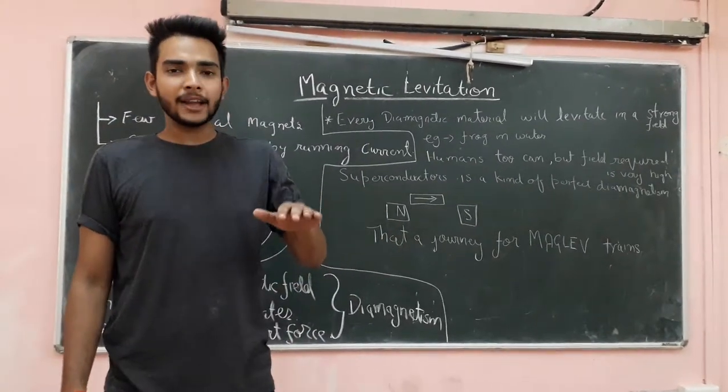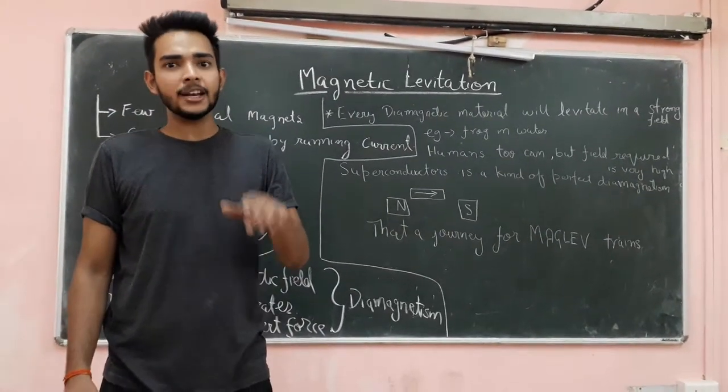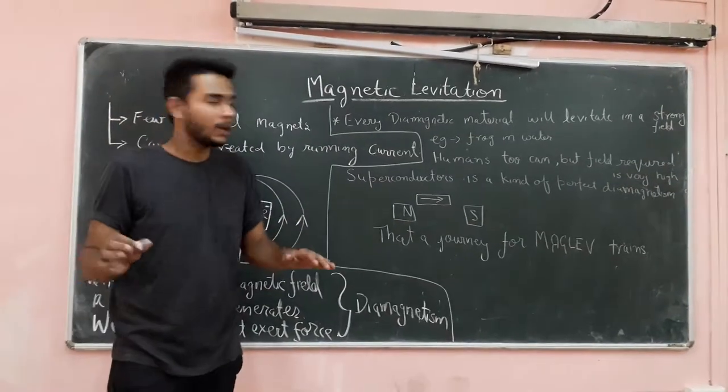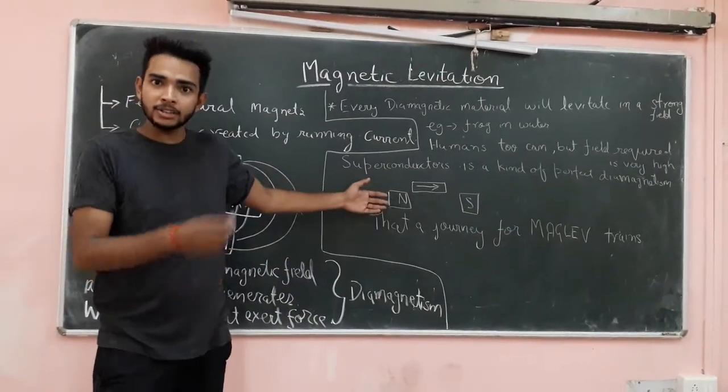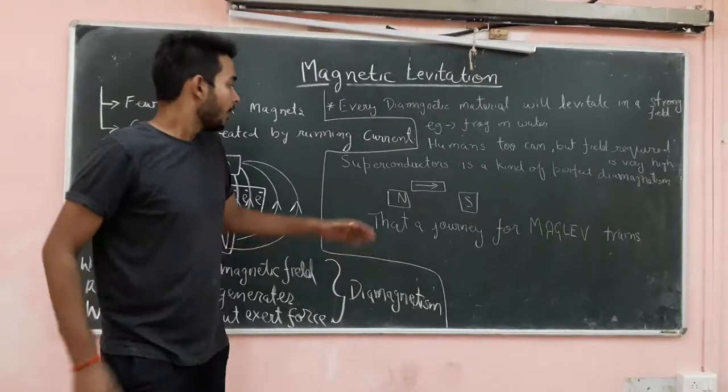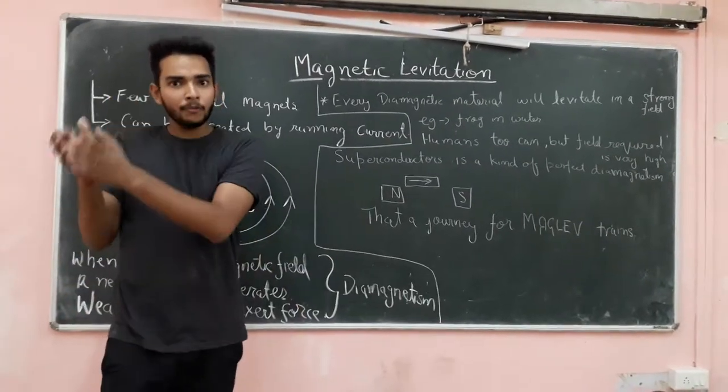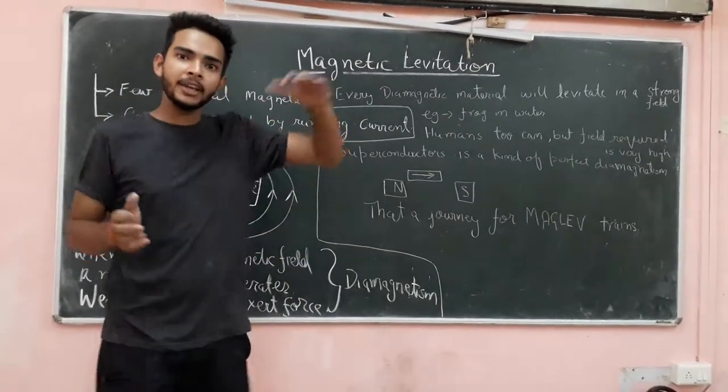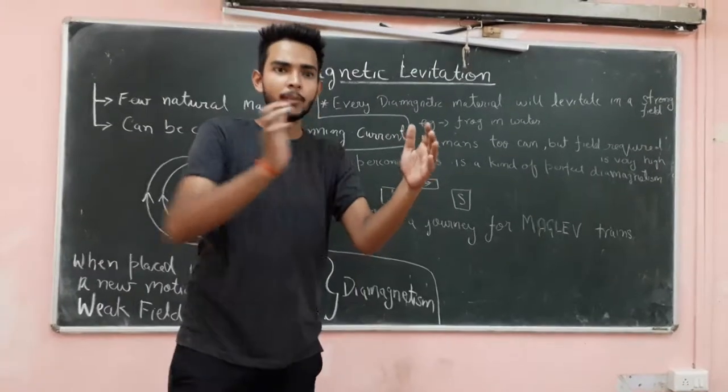So, actually the speed of magnetic trains is very high just because of this. Because it exerts that much force. When from one end it is repelled and the other end it is attracted, the motion continues.